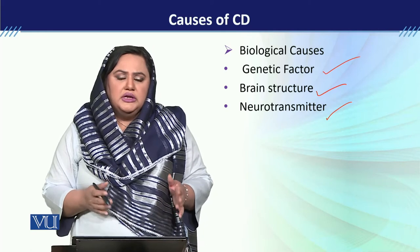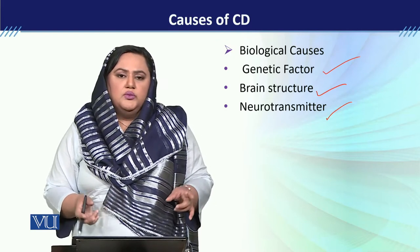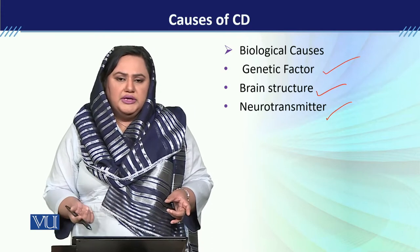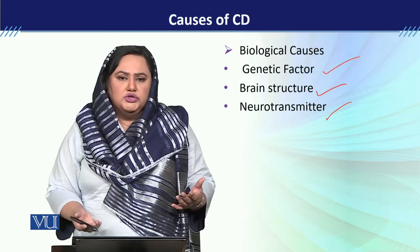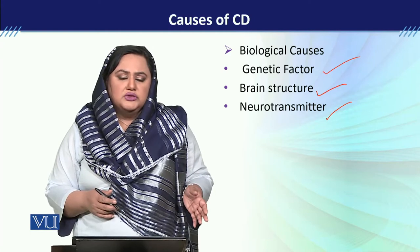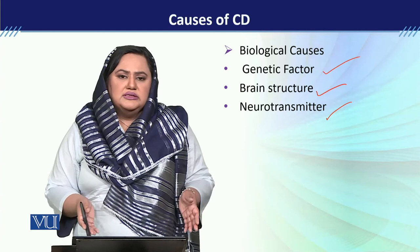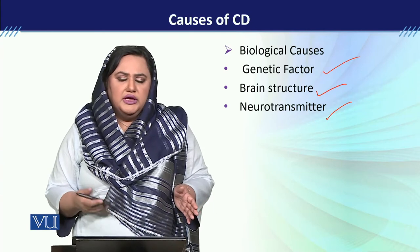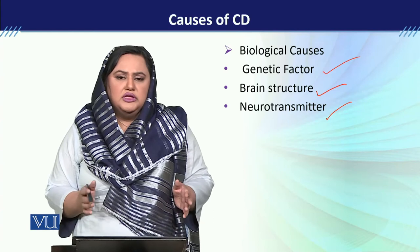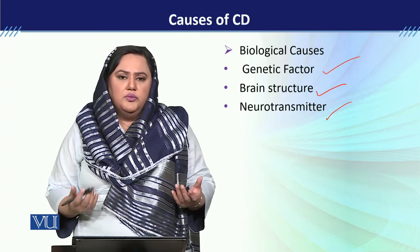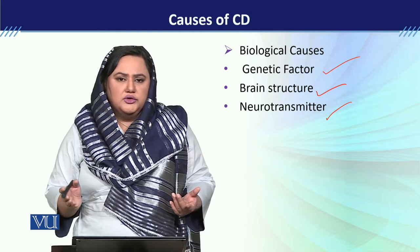Then the neurotransmitters. There is an irregularity in serotonin, and along with this, norepinephrine and dopamine levels are also imbalanced. These three neurotransmitters work together as a team. If their balance is disrupted, then cyclothymic disorder is more likely to develop.